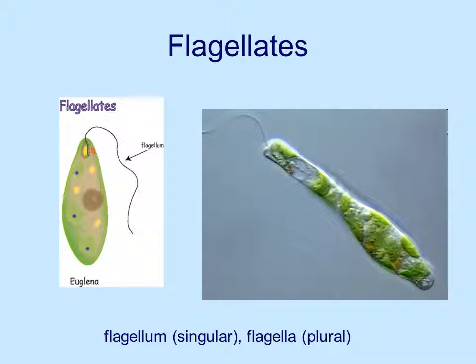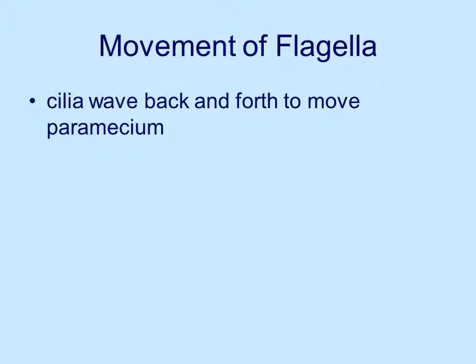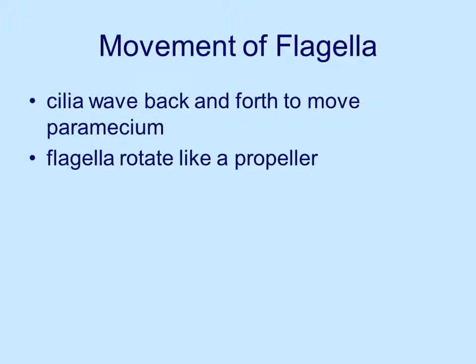Flagellates are a different type of Protista. Flagellum is singular, flagella is plural. The flagellates have a little tail on the end — this is the euglena. You can see the green chloroplast and the little tail. Flagella move differently than cilia: cilia wave back and forth to move the paramecium, whereas flagella rotate like a propeller. There's one thread that goes round and round, driving the euglena like a boat. Just picture a boat on the lake with an outboard motor — the propeller going around pushing the boat forward. That's how a euglena moves.